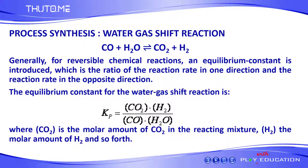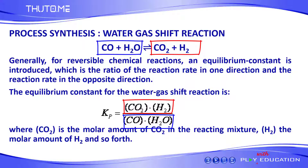For reversible chemical reactions, an equilibrium constant is usually used to find the ratio of products to reactants at equilibrium. The equilibrium constant for the water gas shift reaction is traditionally expressed as the ratio of the mole fractions of CO2 and H2 to that of CO and H2O.